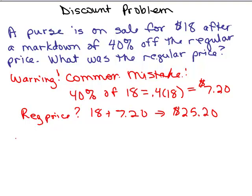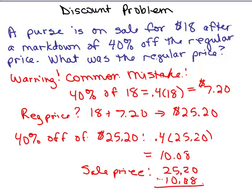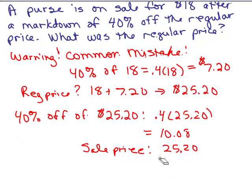But does this make sense? Well, what is 40% off of 25.20? You would do .4 times 25.20. I'm using my calculator. It's $10.08. So the sale price would be 25.20 minus $10.08, and that would give you 12, 15.12. But the purse, that doesn't make sense, right?